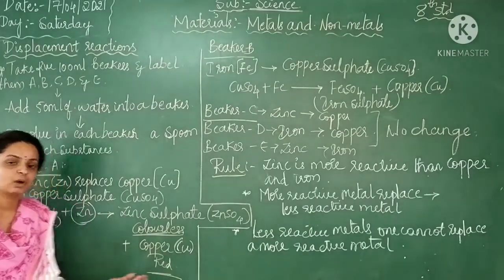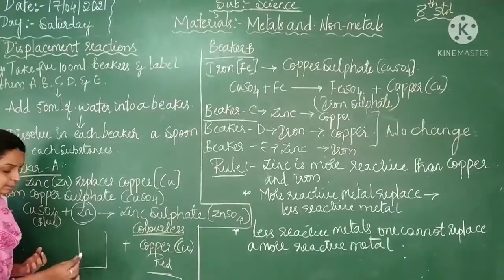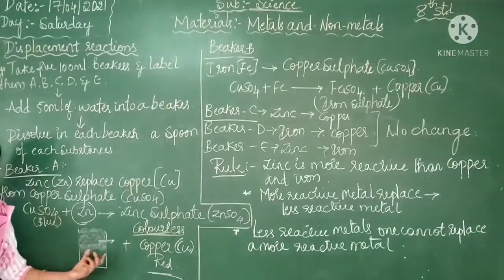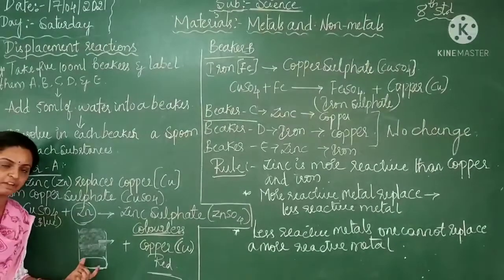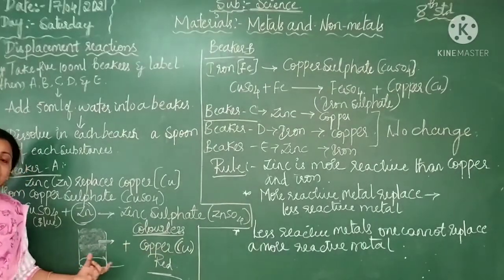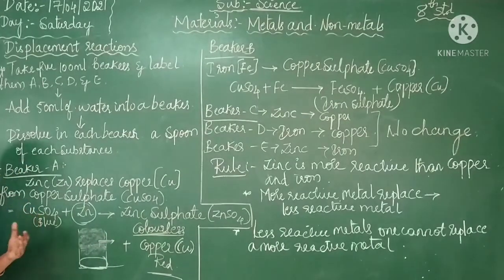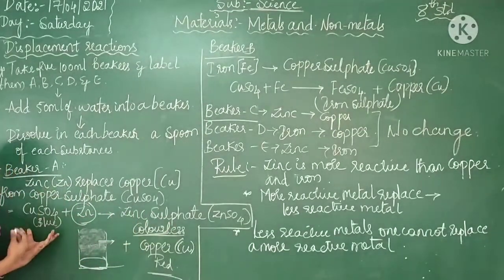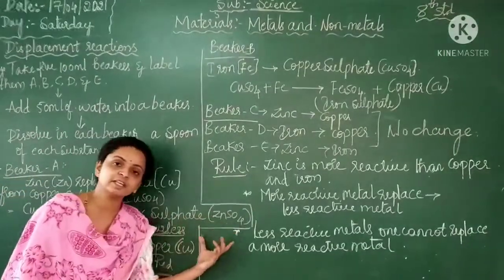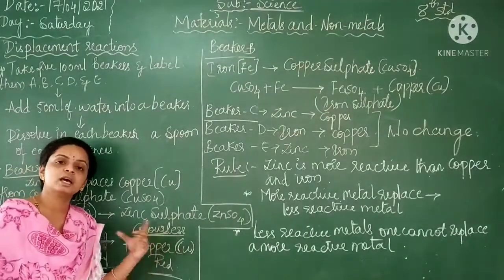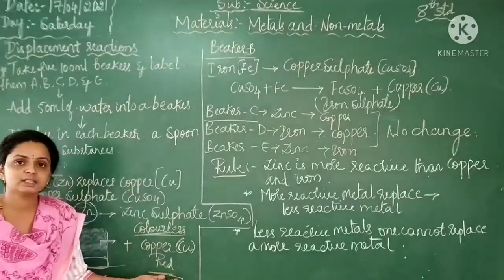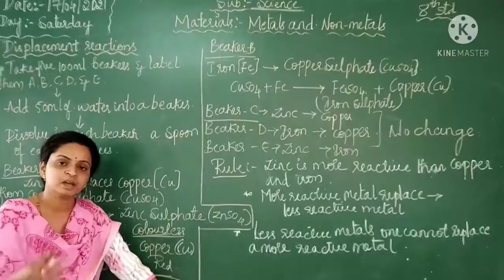This is how the beaker A reaction works — how it is replaced from one metal to another. The zinc replaces the copper, meaning the copper sulphate is present in the solution. When copper sulphate reacts with zinc, zinc sulphate is present — it is colourless in nature — and at the bottom of the beaker, there is powder in the form of copper.